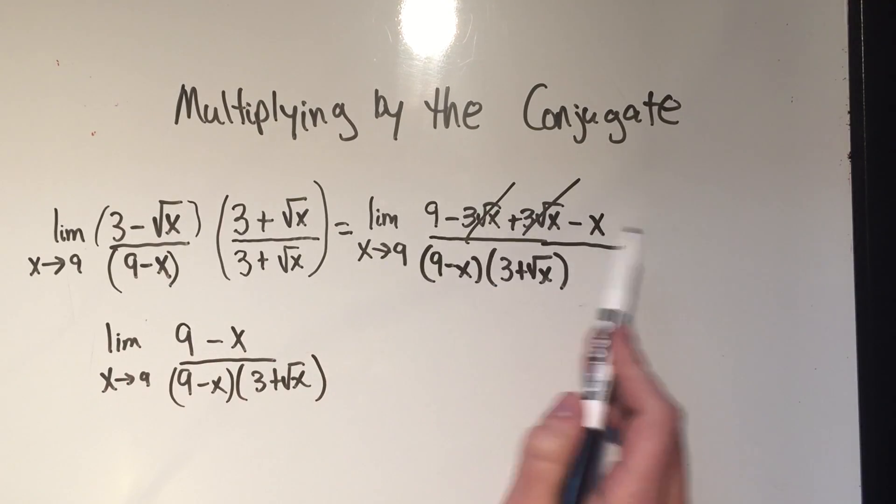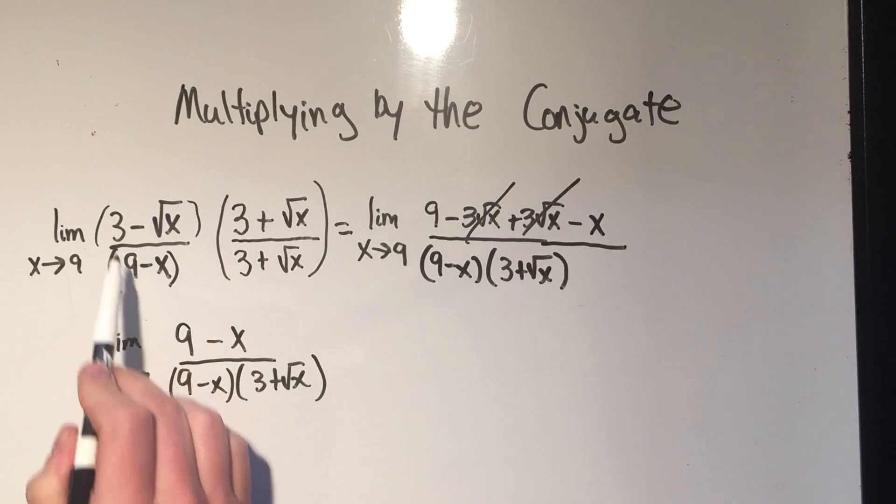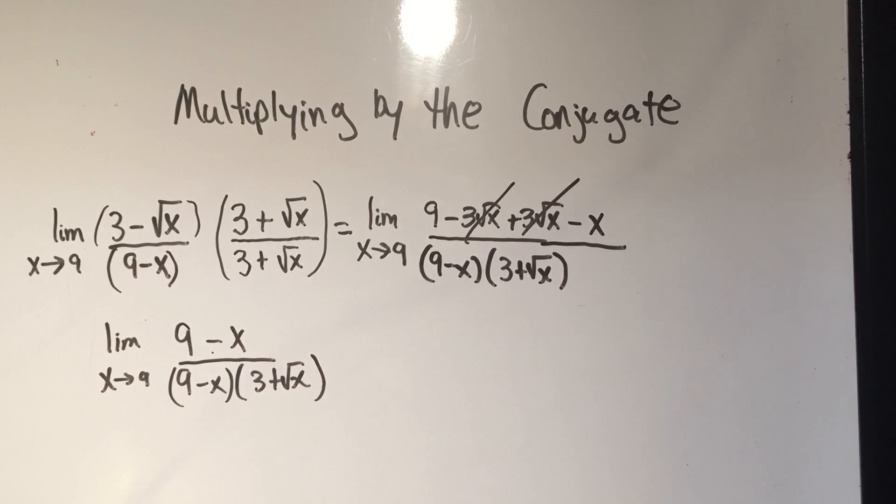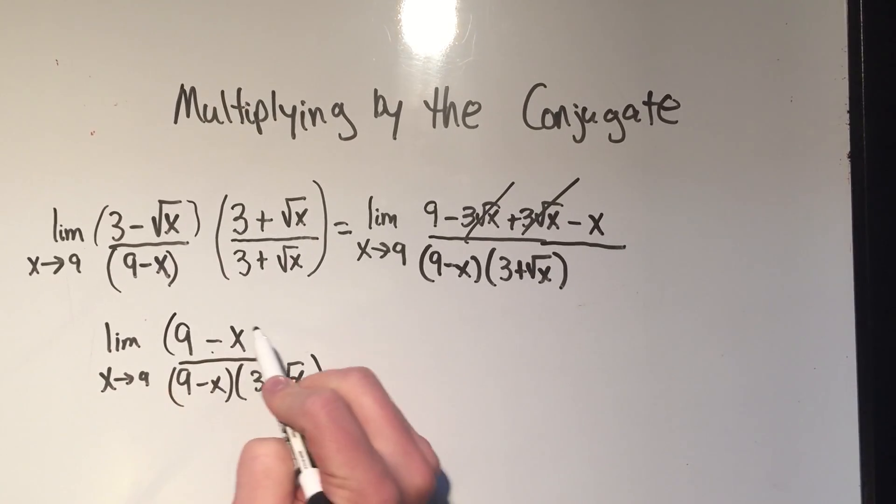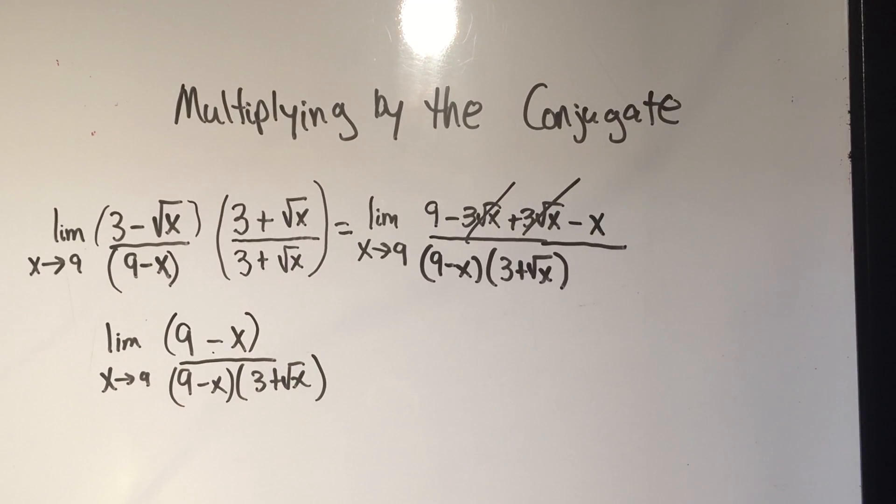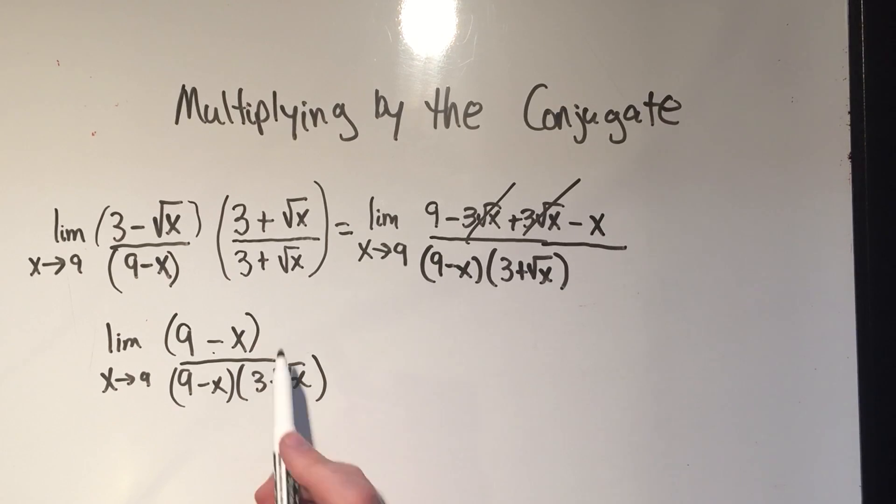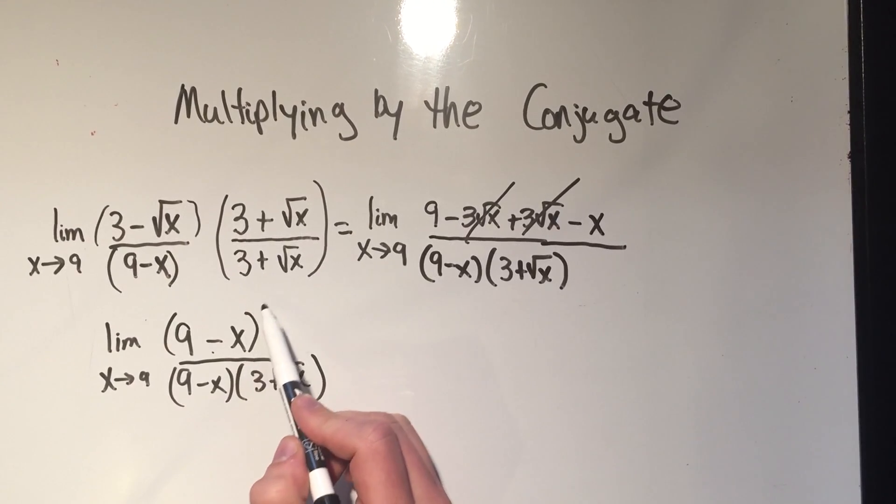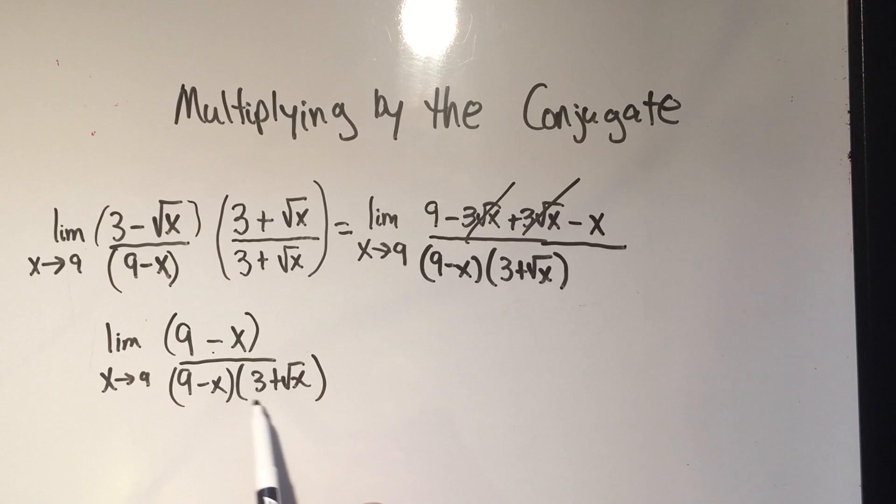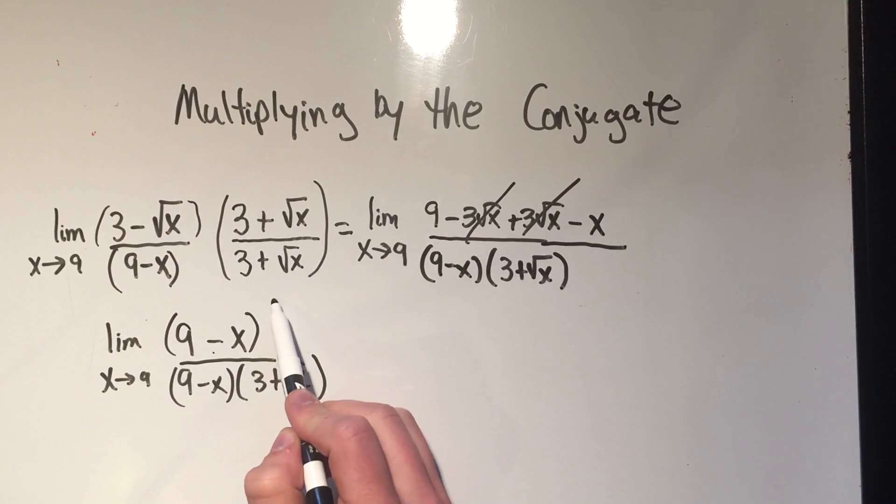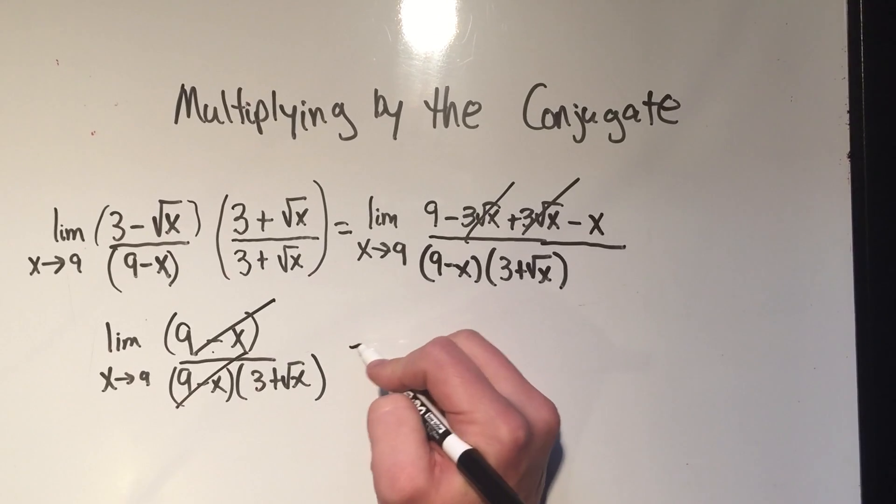So don't do this foil process every time, you're going to waste some time. Just square the first term minus square the second term. After you do that, you might have to simplify the numerator at this point sometimes. In this case I didn't have to, but sometimes you might have to combine terms. In this example, I don't have to.